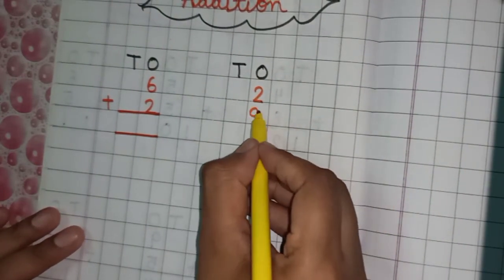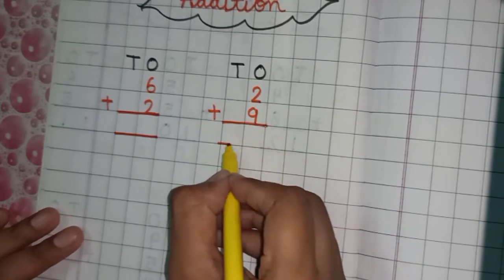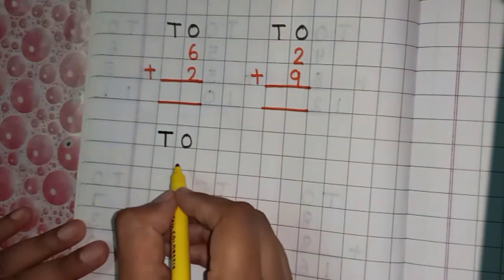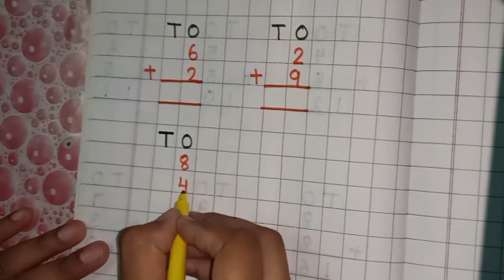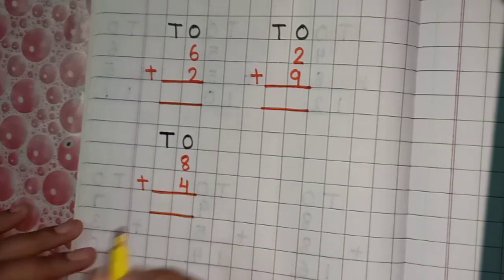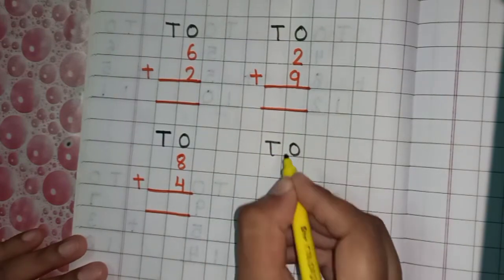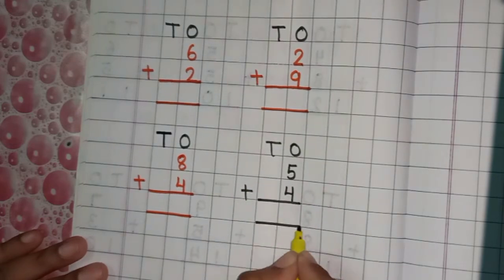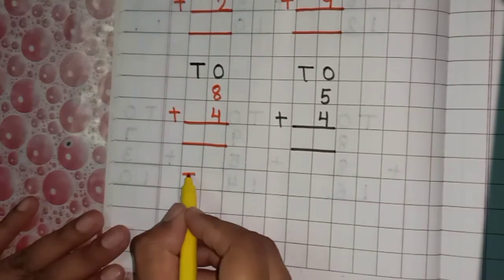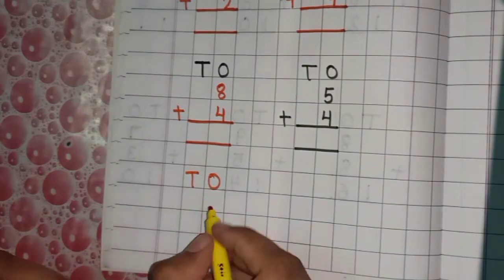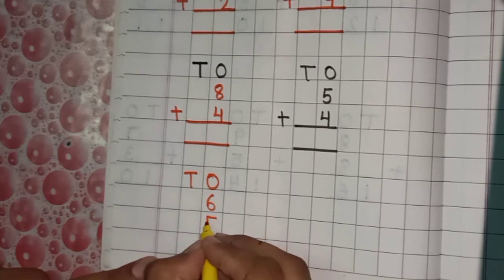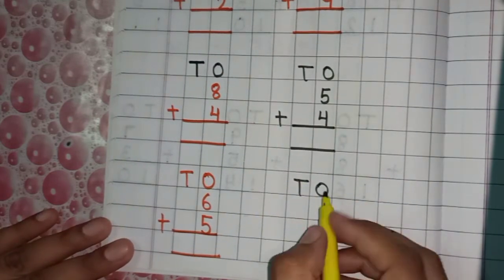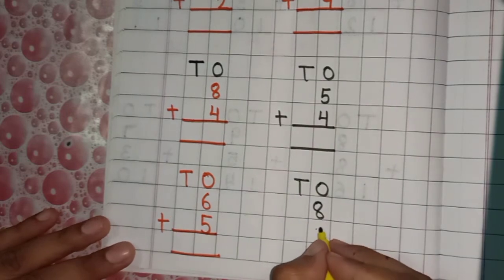Practice questions: tens and ones — two plus nine. Tens and ones — eight and four. Tens and ones — five and four. Tens and ones — six and five. Tens and ones — eight and nine. These questions you will do yourself.